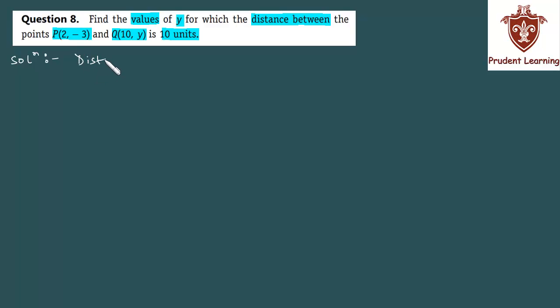In this question, we are given distance between point P with coordinates (2, -3) and Q with coordinates (10, y) is 10 units.